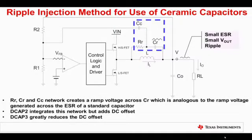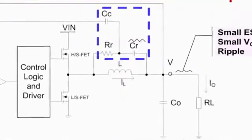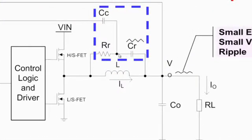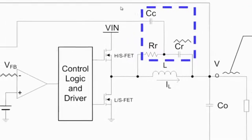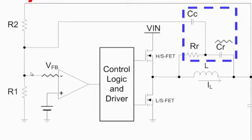DCAP3 Control Mode provides a significant DC offset reduction, which enables much tighter DC accuracy. What you see here is the RC ripple synthesizer network that we use with a DCAP Control Mode converter that takes the very little ripple that comes from the output capacitors that are multi-layer ceramic capacitors and synthesizes an artificial ripple that the DCAP mode buck converter needs to compare to the voltage reference. DCAP3 Control Mode reduces the DC offset contained in the ripple and therefore tightens the DC accuracy.